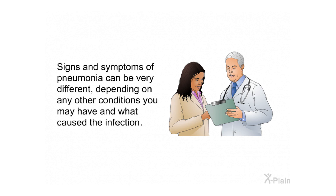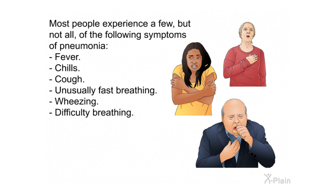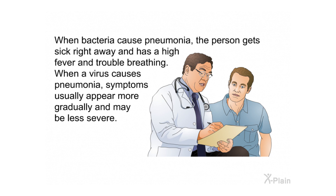Signs and symptoms of pneumonia can be very different depending on other conditions you may have and what caused the infection. Some symptoms, like a cough or sore throat, are common to other infections. Often people get pneumonia after they've had the flu or an upper respiratory tract infection like a cold. Most people experience a few but not all of the following symptoms: fever, chills, cough, unusually fast breathing, wheezing, and difficulty breathing. Less common symptoms include chest or abdominal pain, loss of appetite, exhaustion, and vomiting. When bacteria cause pneumonia, the person gets sick right away with a high fever and trouble breathing. When a virus causes it, symptoms appear more gradually and may be less severe.